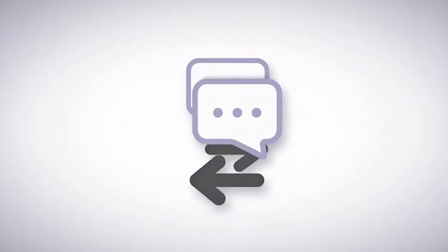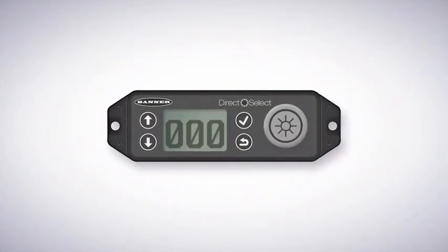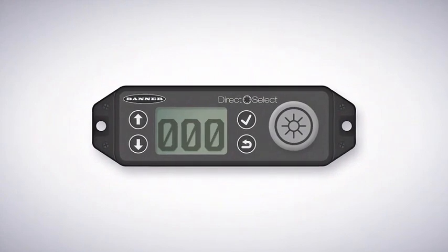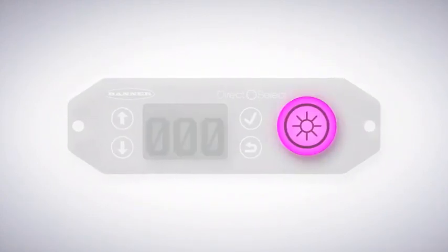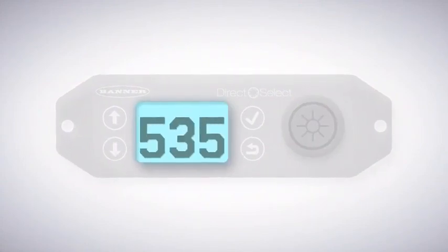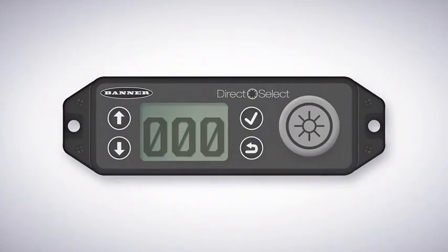Get two-way communication where you need it with a Direct Select wireless node, your mobile visual indicator from Banner Engineering. The Direct Select combines a highly visible status indication button, three-digit LCD display, and replaceable battery all in a single mobile wireless device.